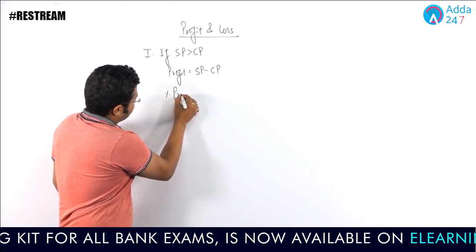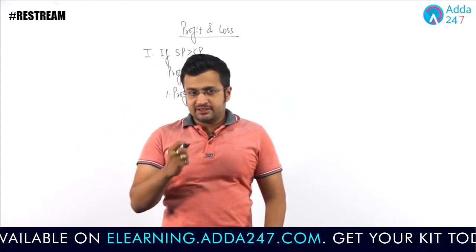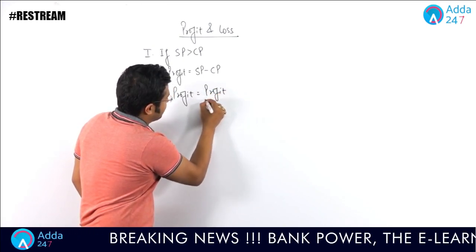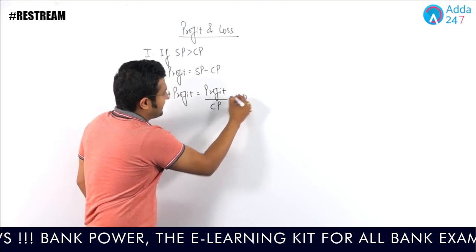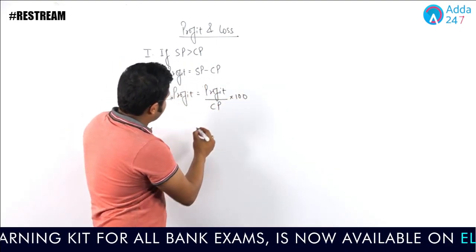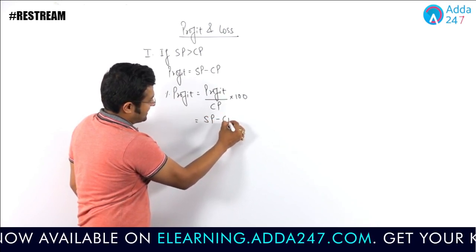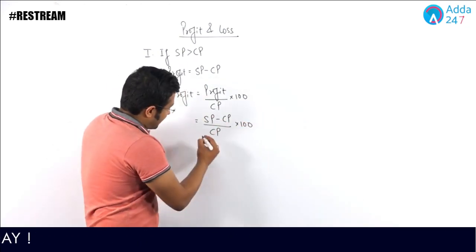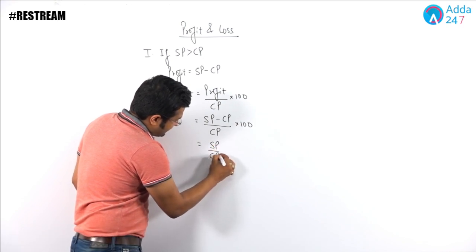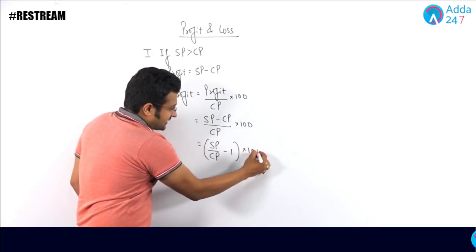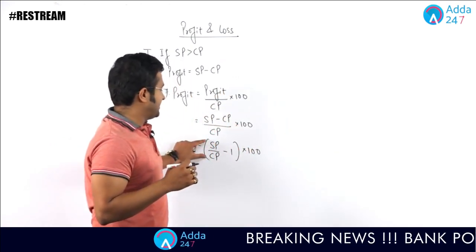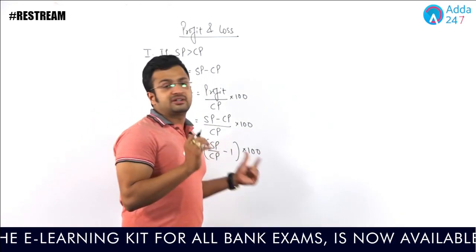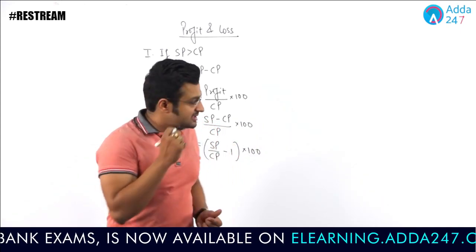What about percentage profit? Percentage profit is nothing but the profit as a percentage of cost price — that is, profit divided by CP, multiplied by 100. If you replace profit with SP minus CP, you get (SP minus CP) upon CP into 100, which can be written as (SP upon CP minus 1) into 100. So whatever be the ratio of SP and CP, subtract 1 and multiply by 100 to get percentage profit.